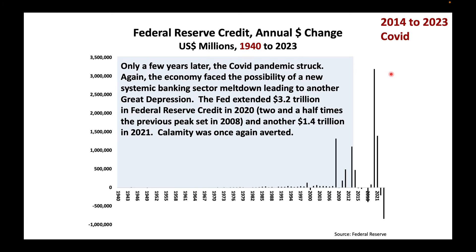Only a few years later, the COVID pandemic struck. Again, the economy faced the possibility of a new systemic banking sector meltdown leading to a new Great Depression. The Fed extended $3.2 trillion in Federal Reserve Credit in 2020 — two and a half times the previous peak set in 2008 — and then another $1.4 trillion in 2021. Calamity was once again averted.